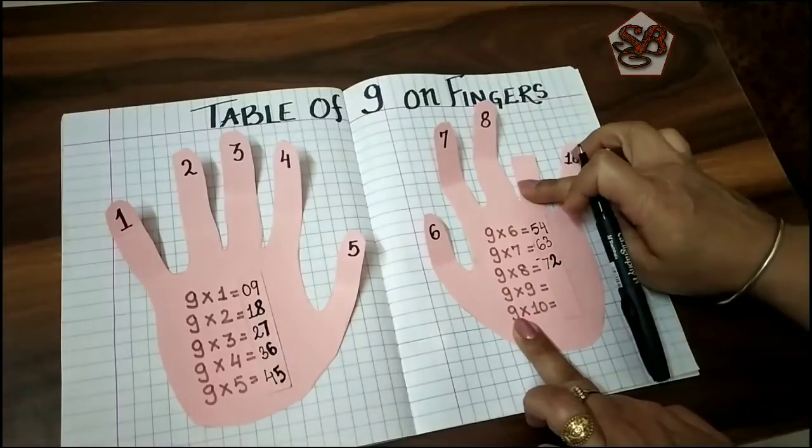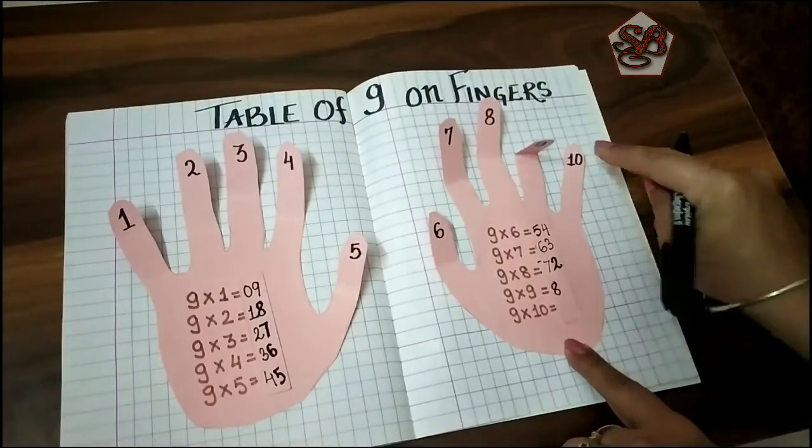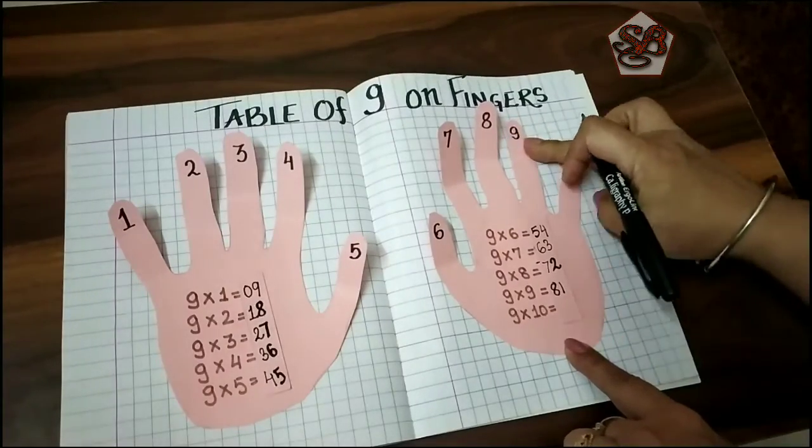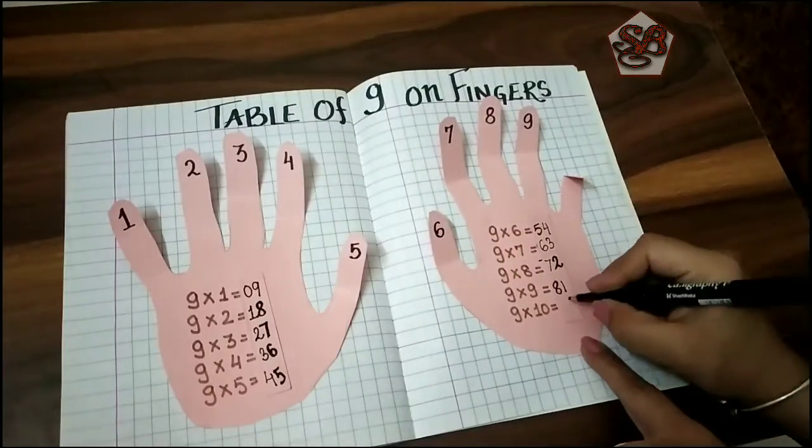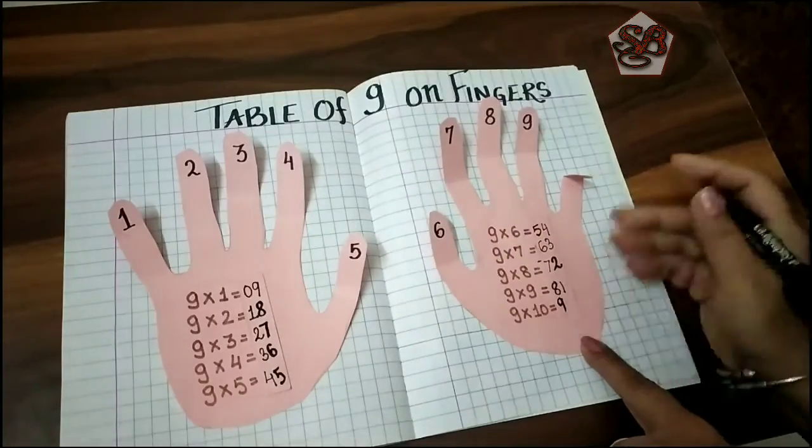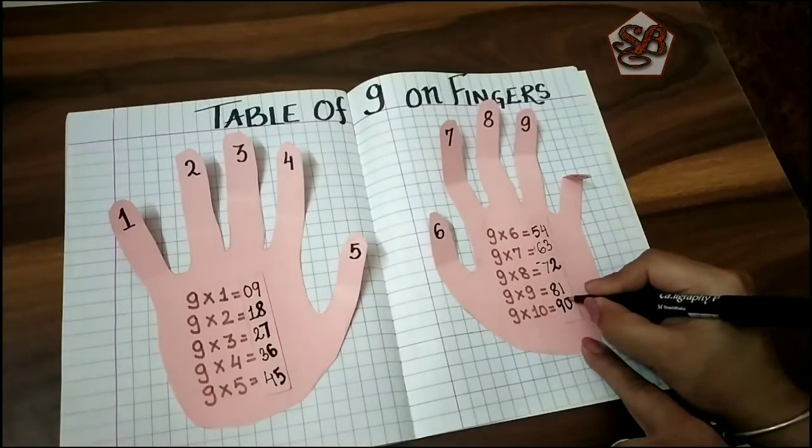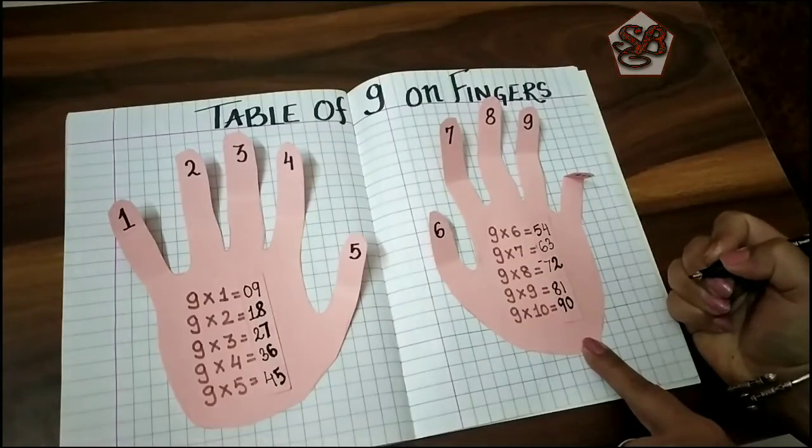Nine nines are - eight and one. Eighty-one. Nine tens are - nine and no fingers left on the right hand side, so zero. Ninety.